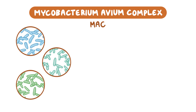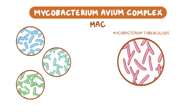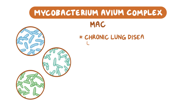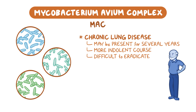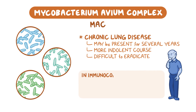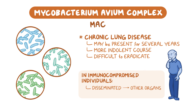MAC is very different from Mycobacterium tuberculosis. MAC lung infection is a chronic disease, often present for several years prior to diagnosis. It typically has a more indolent course and can be difficult to eradicate, with frequent recurrences after completing long courses of treatment. In addition, in immunocompromised individuals, MAC can become disseminated, affecting organs other than the lungs, and can cause lymphadenitis.